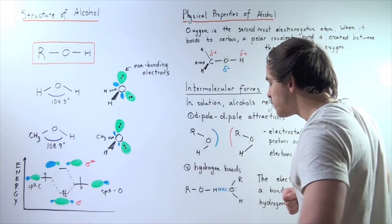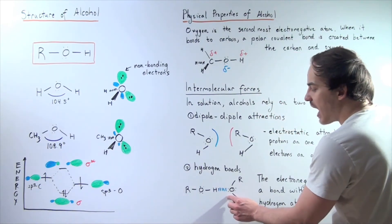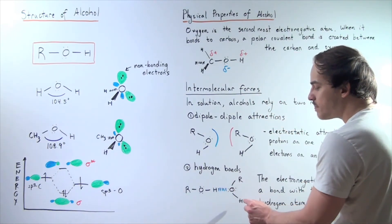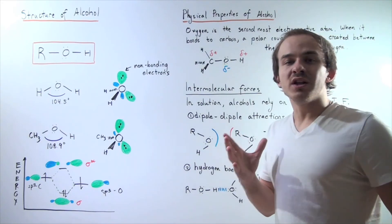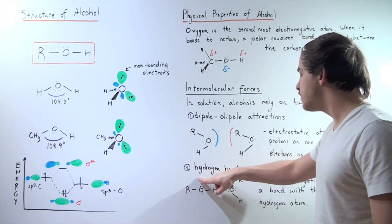The electronegative oxygen found on one of the compounds creates a bond with the partially positive hydrogen atom on the second compound. This H found on the first compound reacts with the oxygen found on the second compound to form a relatively stable bond known as the hydrogen bond.